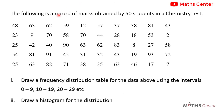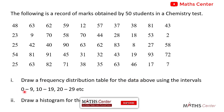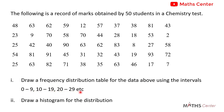The question says that the following is a record of marks obtained by 50 students in a chemistry test. We have the raw data here — the marks scored by the 50 students. The question says that we should draw a frequency distribution table for the data using the intervals 0 to 9, 10 to 19, 20 to 29, etc., and draw a histogram for the distribution. So the question is in two parts.